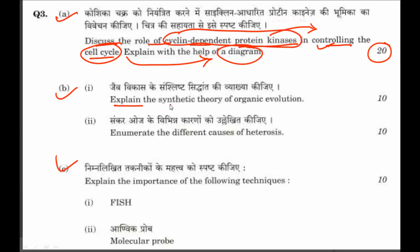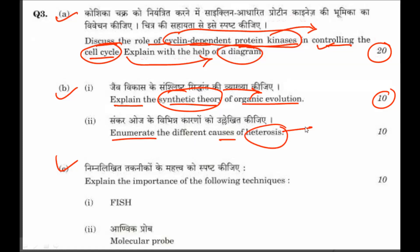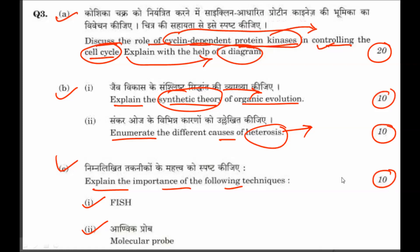Sub-question B: explain the synthetic theory of organic evolution — a straightforward question for 10 marks. Sub-question C: enumerate the different causes of heterosis, for 10 marks. Then explain the importance of the FISH technique — fluorescence in-situ hybridization — and the molecular probe. For writing about these two techniques you will get 10 marks.